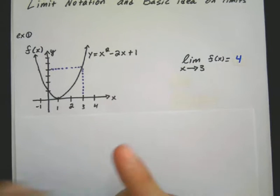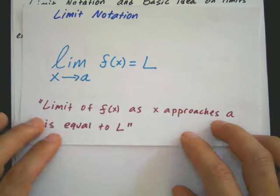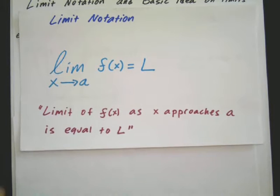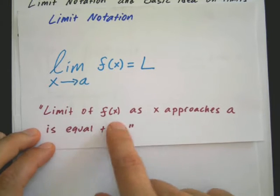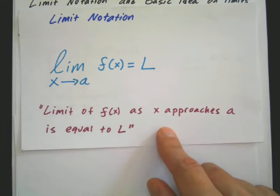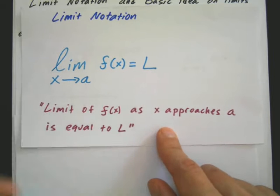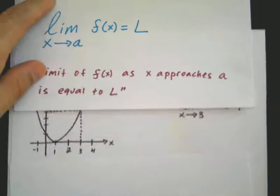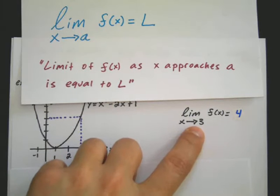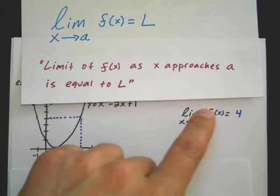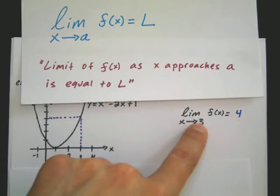And this introduces the formal limit notation. I'll give you guys a second to pause it and copy this down. The way you read this out loud is the limit of f of x as x approaches a is equal to L. And a is just going to be some constant, some number you're going to be approaching, and L is going to be what your answer is. In this example that we just did, the constant was 3. I was approaching 3 on the x and it equaled 4. So the limit of f of x as x approaches 3 is equal to 4.